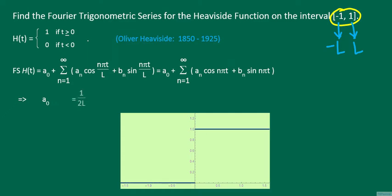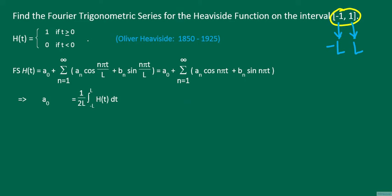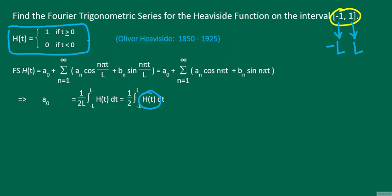A sub 0 is equal to 1 over 2L times the integral from minus L to L of H(t). With L equal to 1, this becomes one half times the integral from minus 1 to 1 of H(t). Since H(t) is non-zero only when t is greater than or equal to 0, the integral becomes one half times the integral from 0 to 1. There H equals 1, so the antiderivative is one half times t, evaluated from 0 to 1, giving us A sub 0 equals one half.